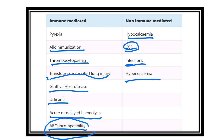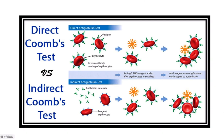In this condition, the most probable diagnosis is ABO incompatibility, because ABO incompatibility affects first. Now here we can see the direct Coombs test and the indirect Coombs test.